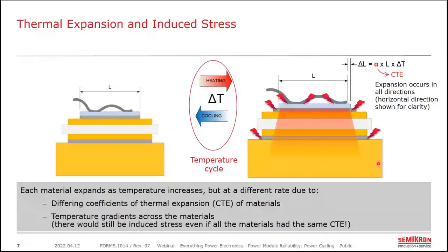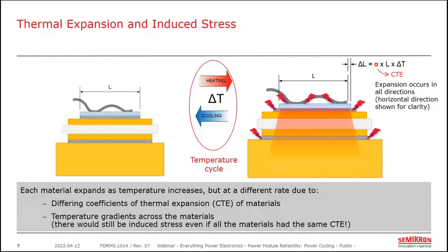Since each material has a different CTE, the materials expand at different rates, causing stress where two materials are joined. As the electrical load varies, the chips cool and materials contract — this heating and cooling defines the temperature cycles used to describe power cycling. Even if all materials had the exact same CTE, there would still be stress because the assembly is not heated uniformly, so the delta T varies for each material.